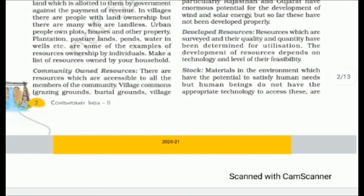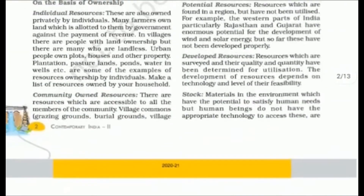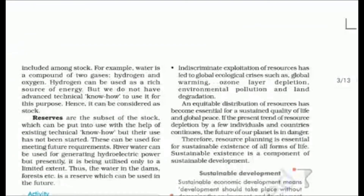Next is stock. Stock refers to materials in the environment that have the potential to satisfy human needs, but humans do not yet have the technology to access them. For example, water contains hydrogen and oxygen which could be used as energy, but we do not yet have the technology to use them in this way. So these are considered stock.